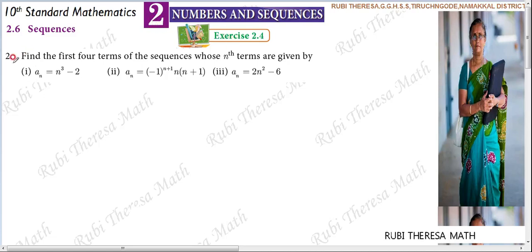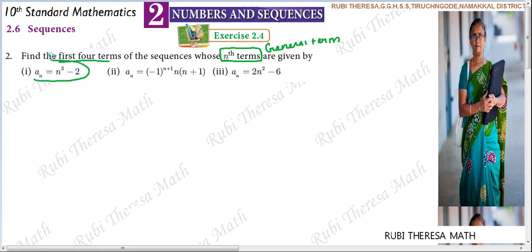Exercise 2.4, second sum. First, find the first four terms of the sequences. They have given three subdivisions. They have defined the sequence using the nth term — the general term. In the first subdivision, the nth term is defined as aₙ = n³ - 2, which means the nth term of the sequence is n cubed minus 2.